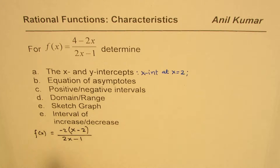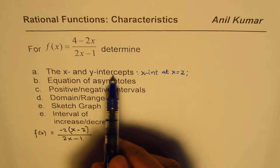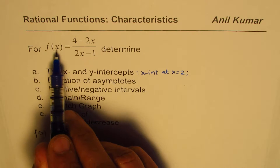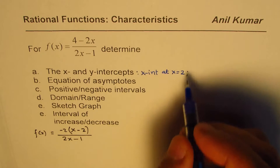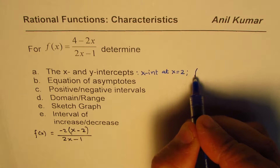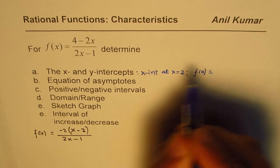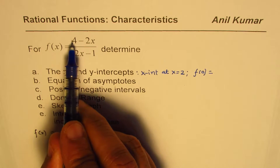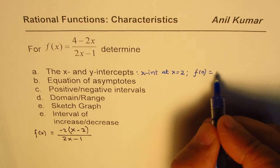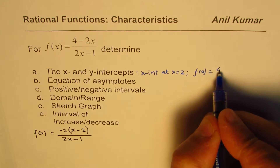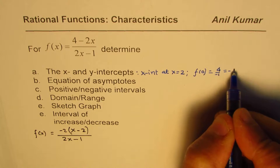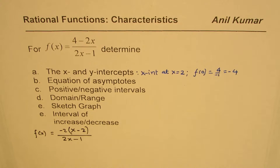For the y-intercept, we find f(0): substituting x = 0 gives 4 divided by minus 1, which is minus 4. So the y-intercept is at minus 4.